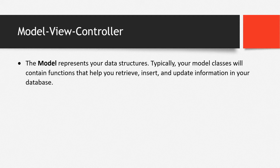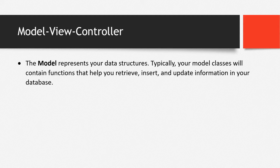The model represents your data structure. Typically, your model classes will contain functions that help you retrieve, insert, and update information in your database. If you are going to manipulate the database, we do that on the model part. The model is not just intended for database manipulation — simple filtering or validation can also be placed in the model.